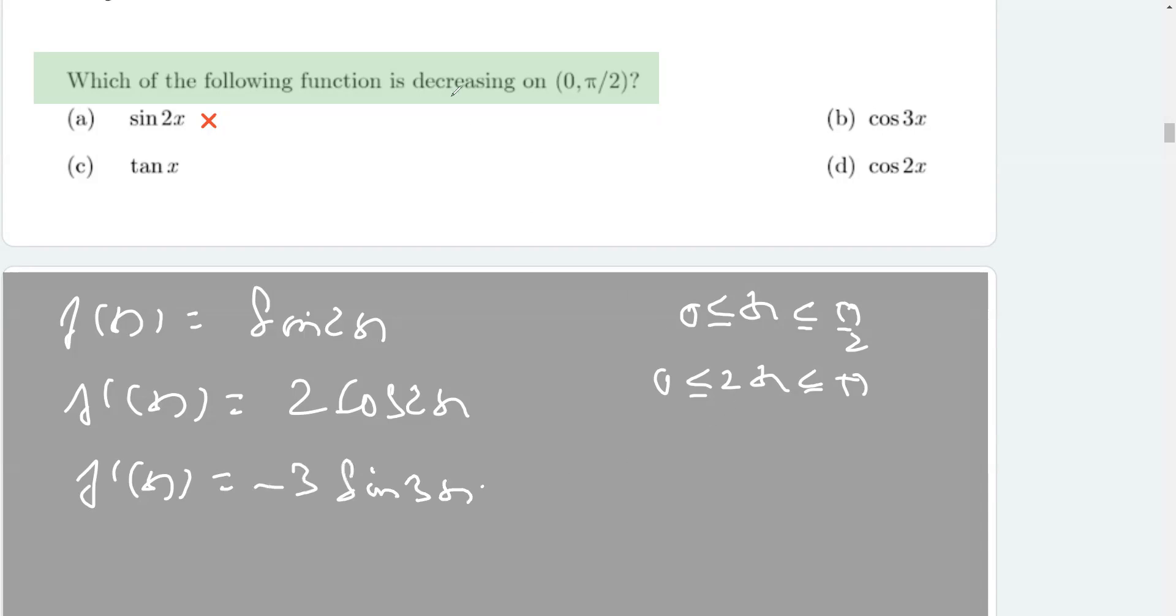Now, this time, again, the interval is going to change here. So, if I multiply 3 on both sides, going to be 2π by 3.